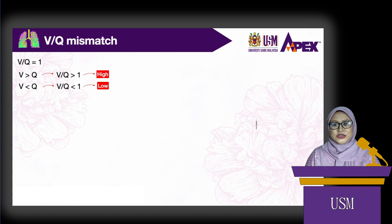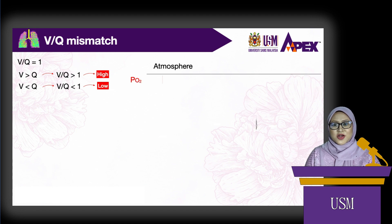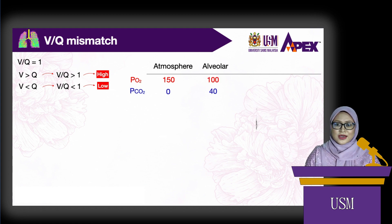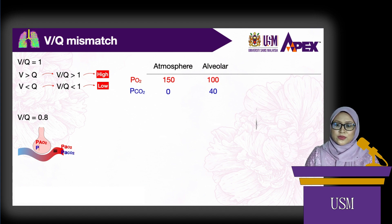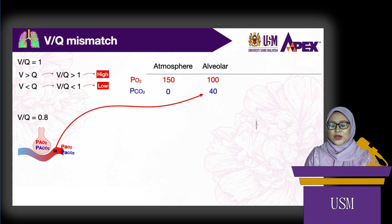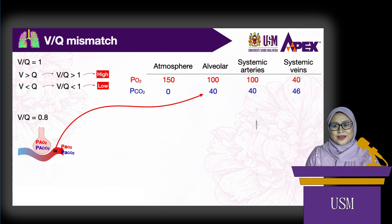The VQ ratio will determine the partial pressure of gas at that particular region. Normally, atmospheric air has a partial pressure of oxygen of 150 mmHg and that of carbon dioxide is 0. Alveolar air has 100 mmHg of oxygen and 40 mmHg of carbon dioxide. When the VQ ratio is normal at 0.8, gas exchange can occur normally, so arterial pressure of oxygen and carbon dioxide equilibrate with alveolar air. Venous blood has 40 mmHg oxygen and 46 mmHg carbon dioxide — low oxygen and higher carbon dioxide.